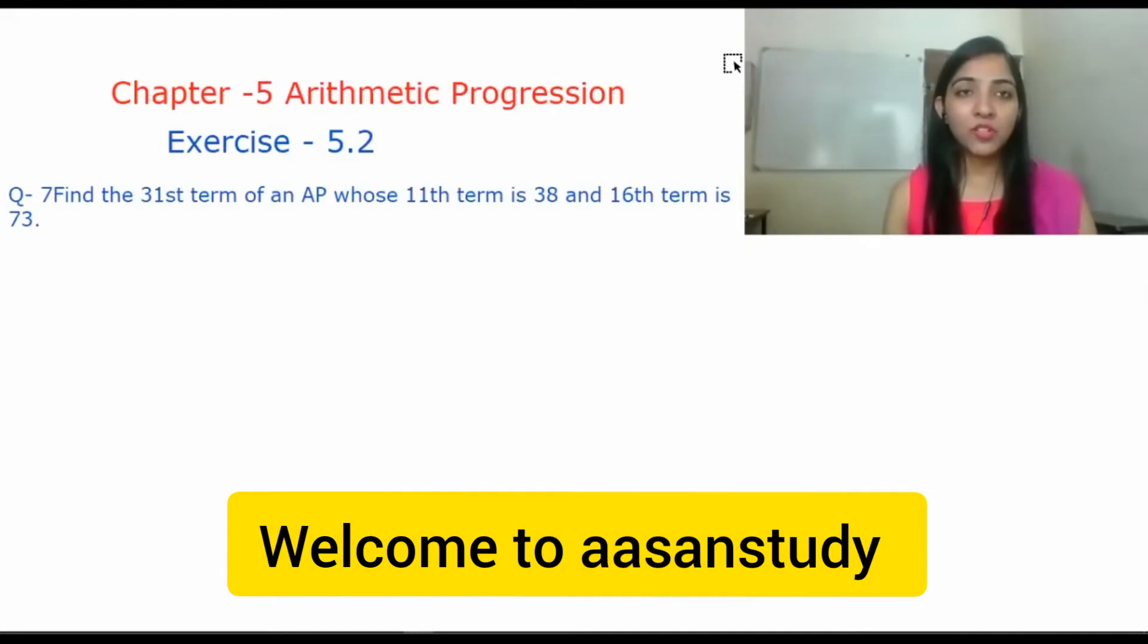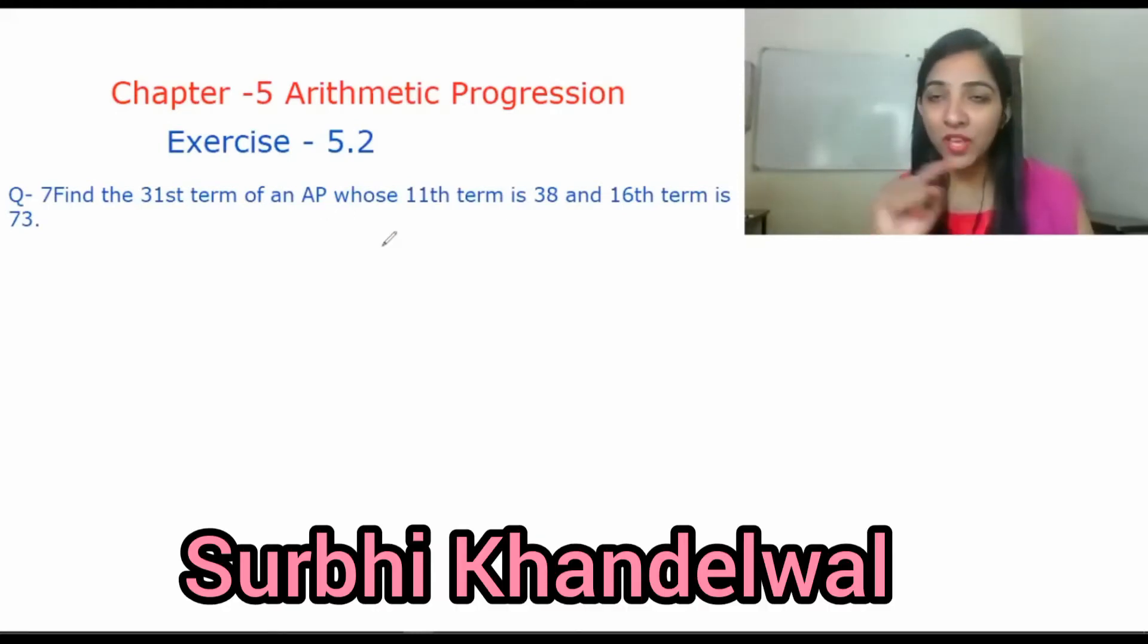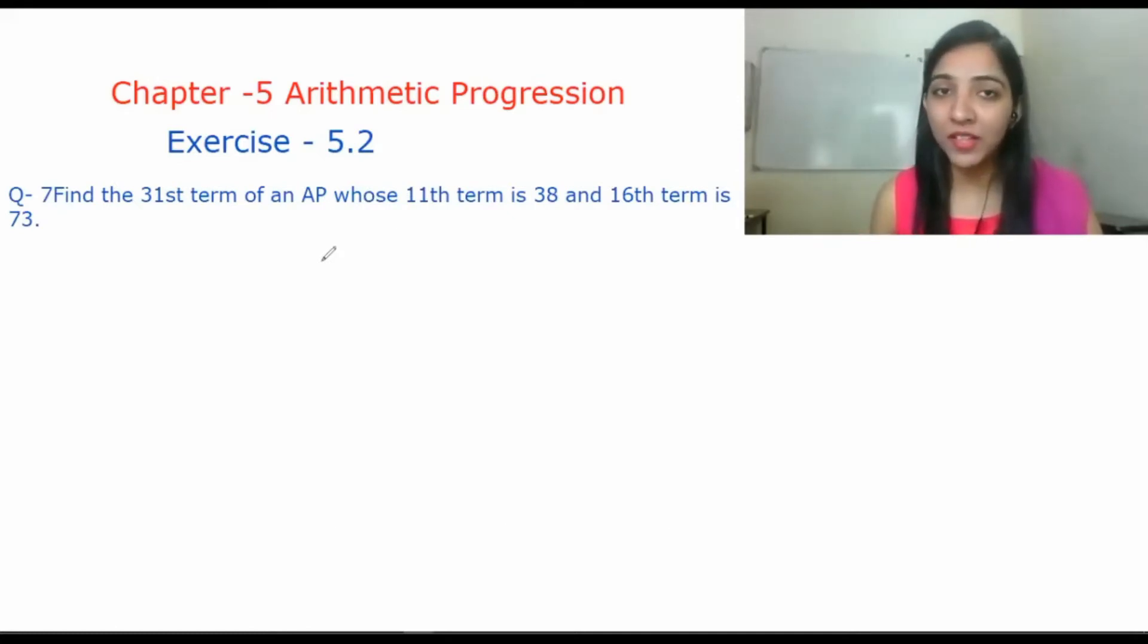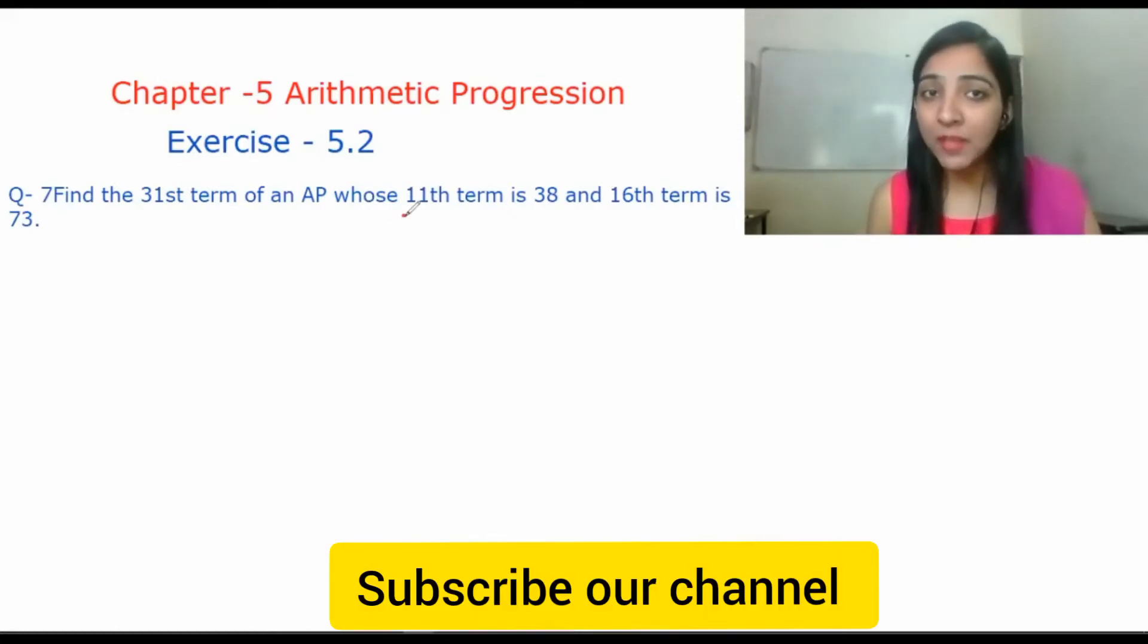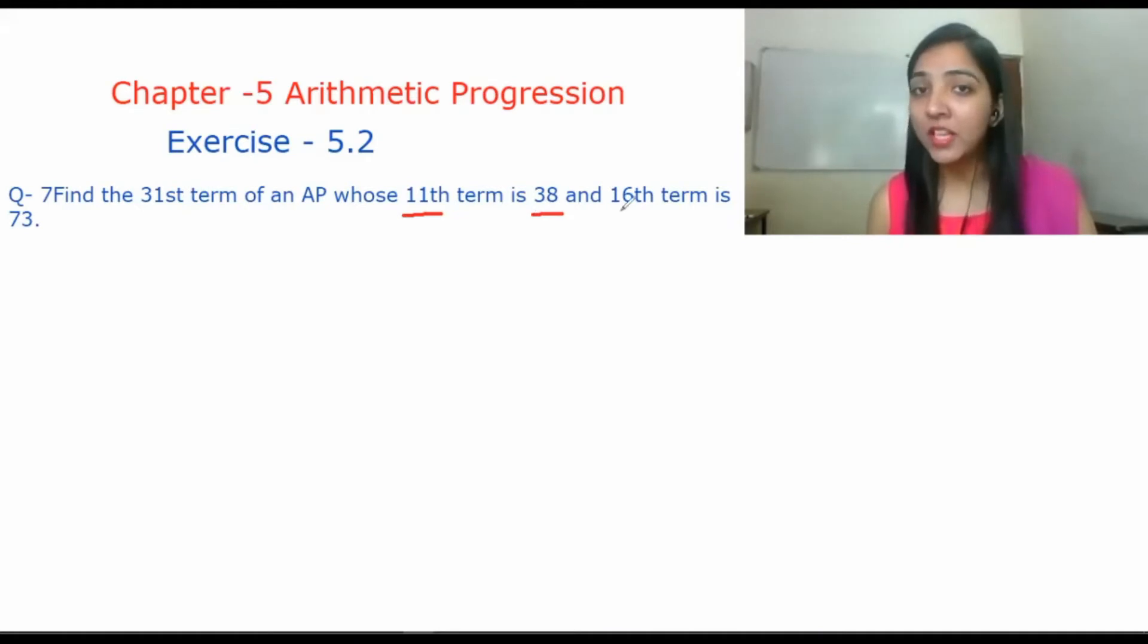In this question, according to the problem, we have to find the 31st term of an AP. We have the 11th term of that AP, which is 38, and the 16th term, which is 73, given. Here we have 2N and 2AN already given.